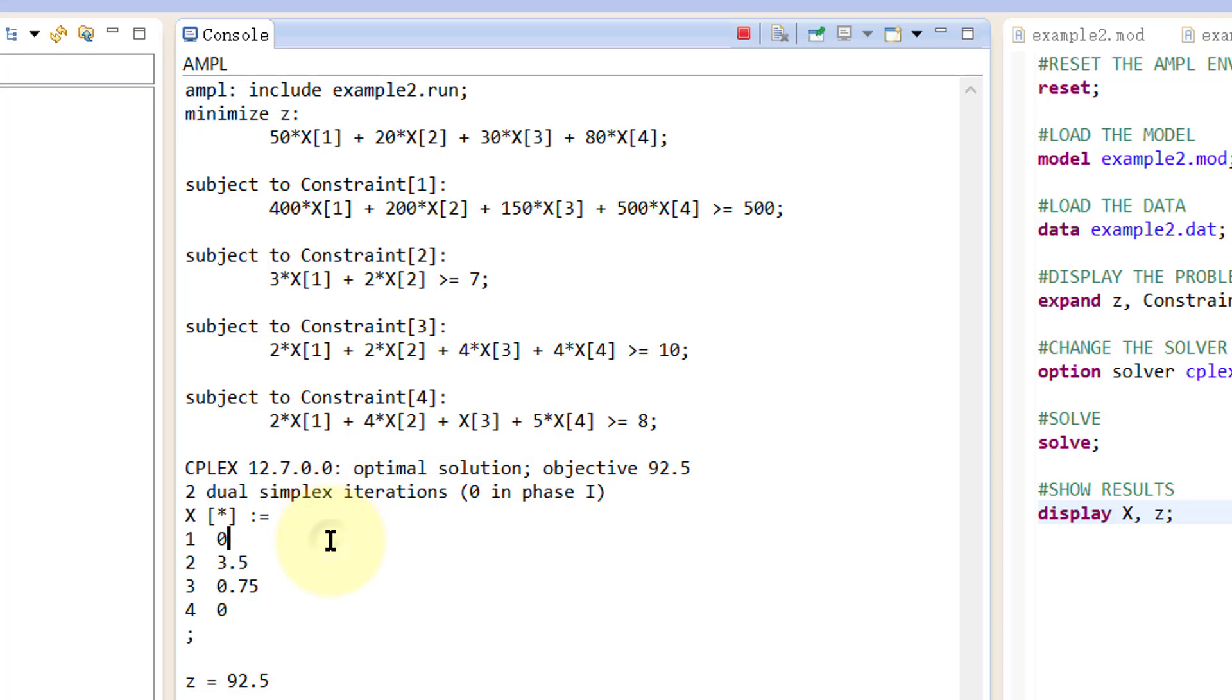The optimal solution is x1 is equal to 0, x2 is equal to 3.5, x3 is equal to 0.75, x4 is equal to 0, z is 92.5.